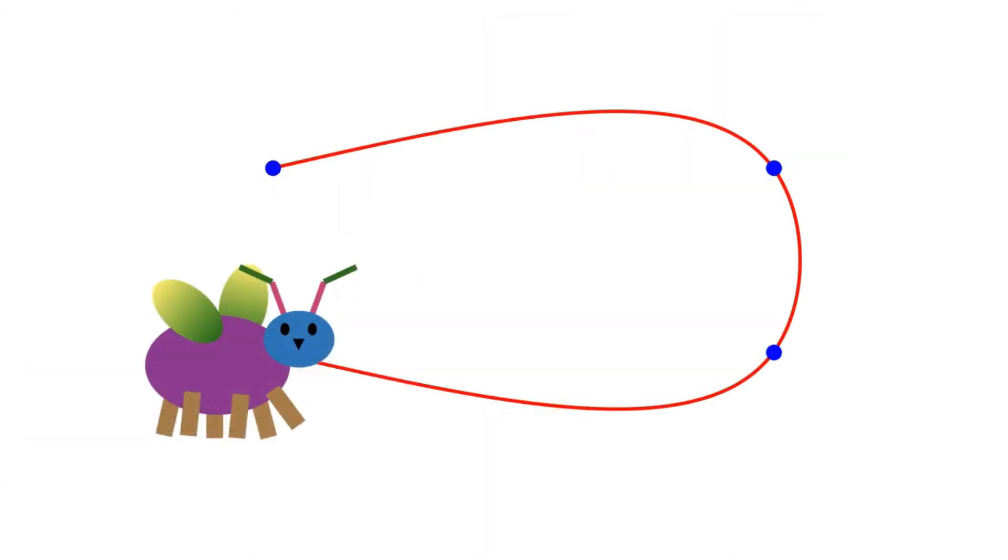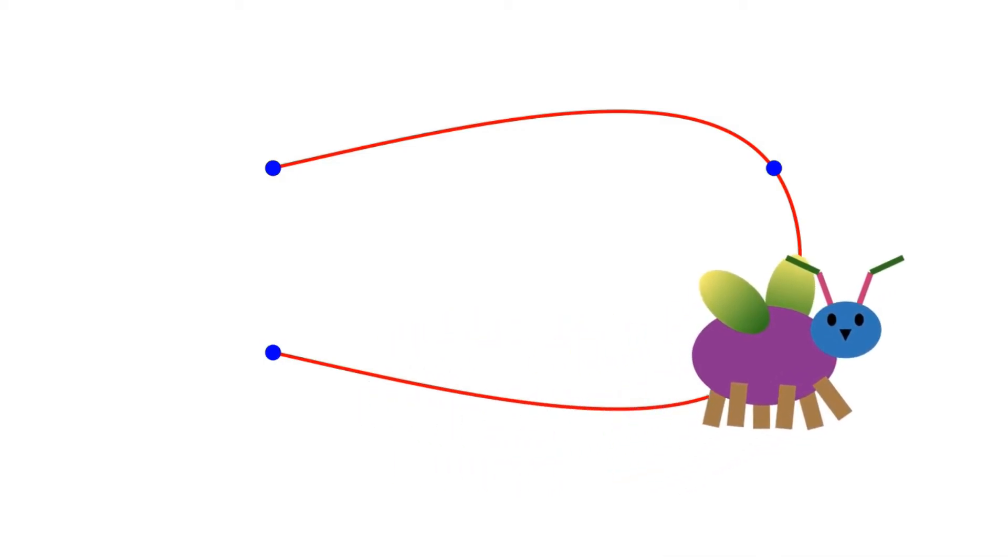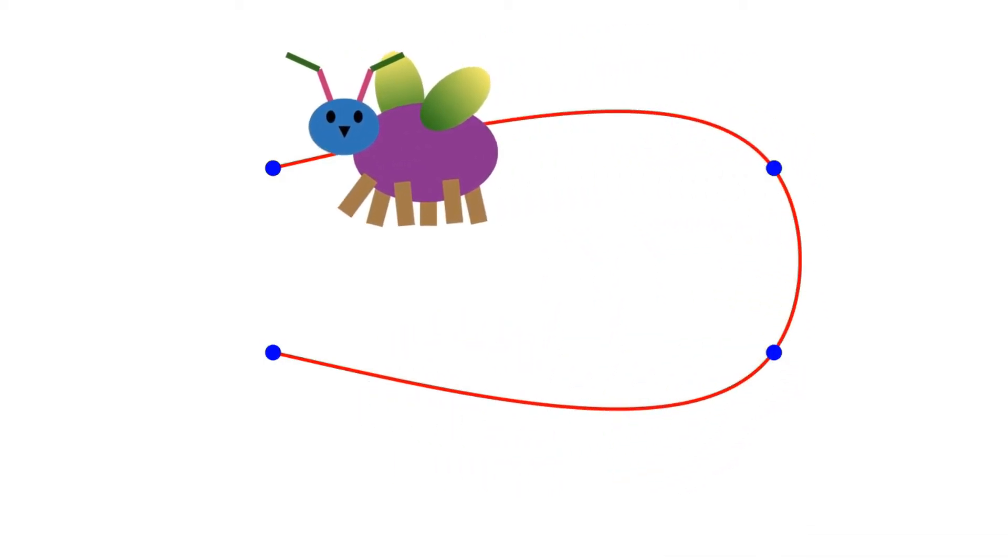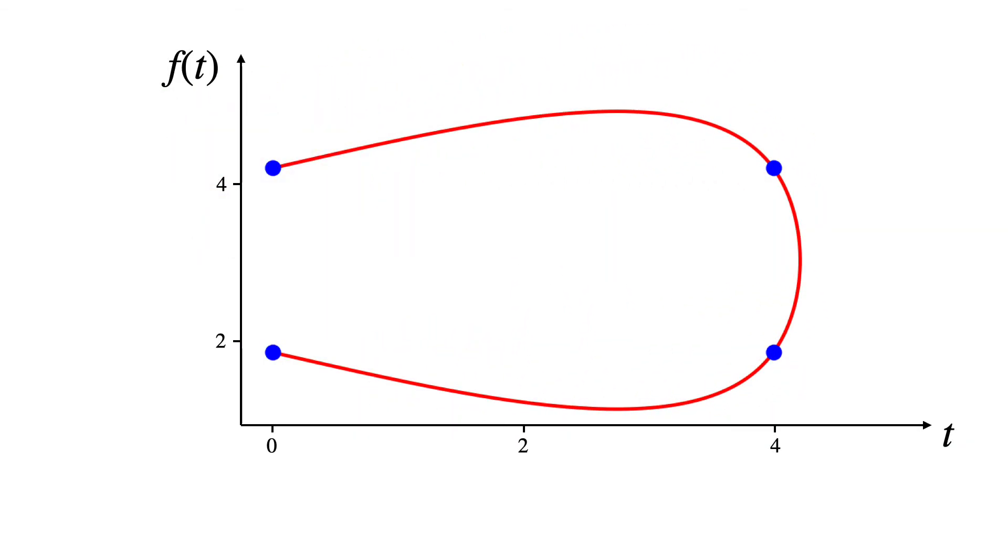Okay, but suppose our bug wants to fly on this path. Well, there's one problem. This isn't a proper function. You can see it has two different F values for the same value of T. We've been treating curves as 1D functions, but they really live in 2D.